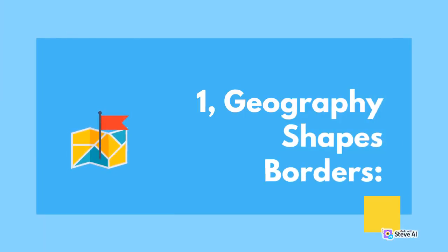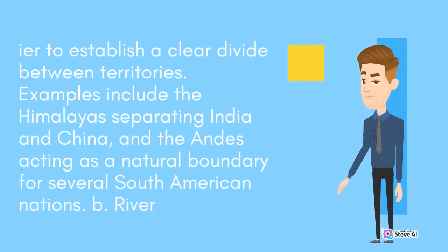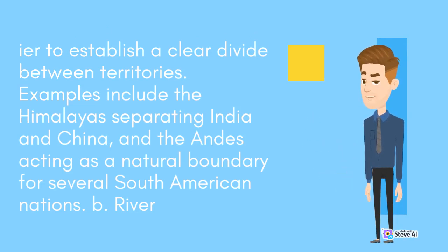Geography Shapes Borders. Physical Boundaries: The natural landscape often serves as a primary determinant of political borders. Mountains, for instance, create formidable barriers that limit human movement and make it easier to establish a clear divide between territories. Examples include the Himalayas separating India and China, and the Andes acting as a natural boundary for several South American nations.